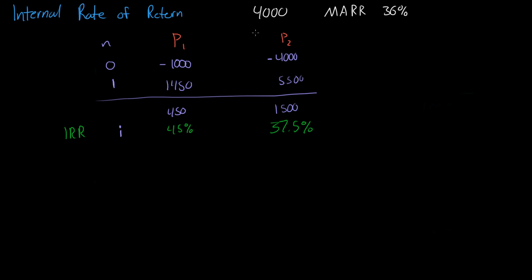We can only accept a project if it has a minimum attractive rate of return of 36%. It would seem that we could afford both of these projects and that we should go with both Project 1 and Project 2. However, we only have $4,000, so we have to choose between one of these projects. Which project should we choose, or should we just not choose any?